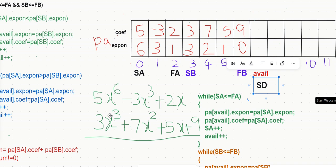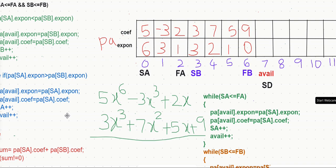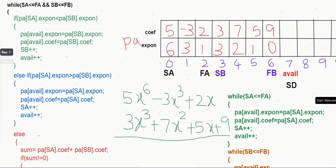Let us see how the addition actually happens. We are going to take one term from each of the polynomials and keep adding terms until both polynomials are finished. When comparing, we compare the exponents. If both are the same, we do a sum. If not, we take the largest exponent term and put it to the avail list. Since there are multiple terms, we use a while loop: as long as SA is less than or equal to FA and SB is less than or equal to FB, we repeat the process.